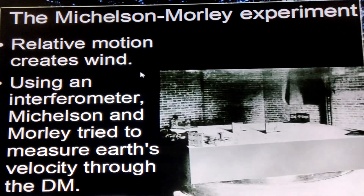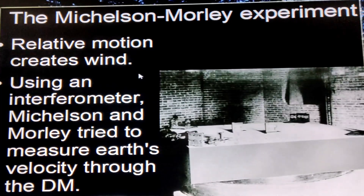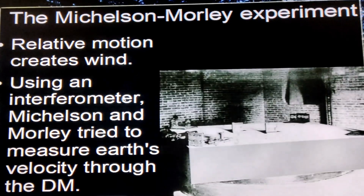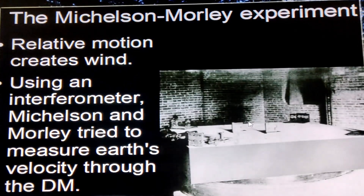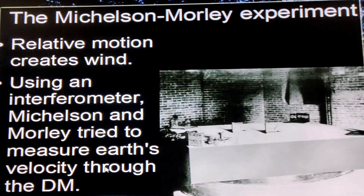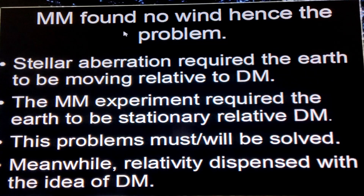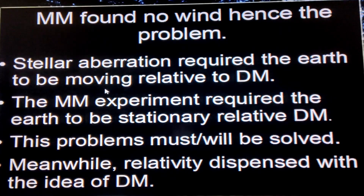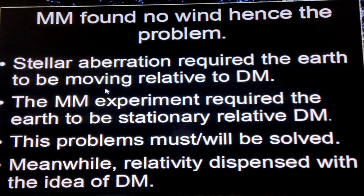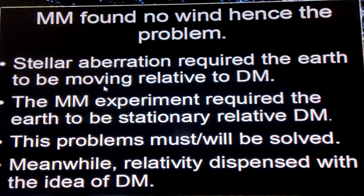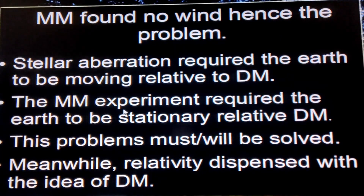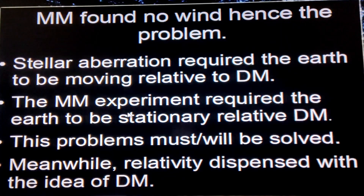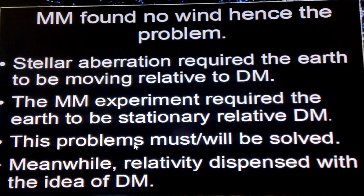If there was such motion through dark matter, it would create some kind of wind — much like if you put your hand outside a car while it's moving, you feel wind because of the motion between you and the air. So what Michelson and Morley did was set up an interferometer to figure out how fast the earth is moving through dark matter, through space itself. Unfortunately, they found no such wind, which created a problem: according to stellar aberration there must be motion, but according to the Michelson-Morley experiment the earth is stationary relative to dark matter.